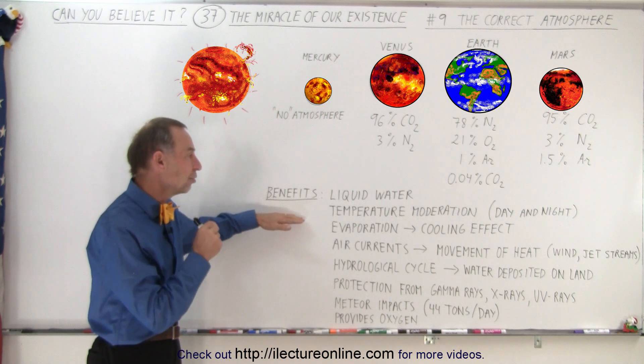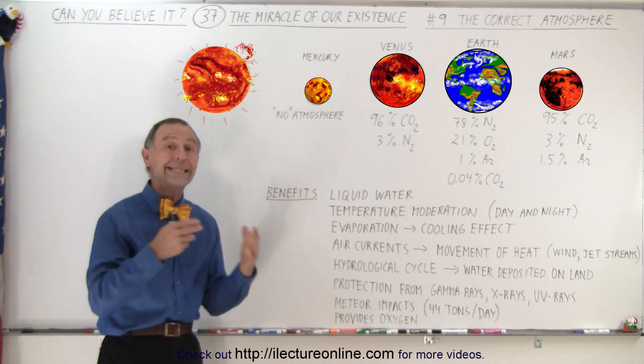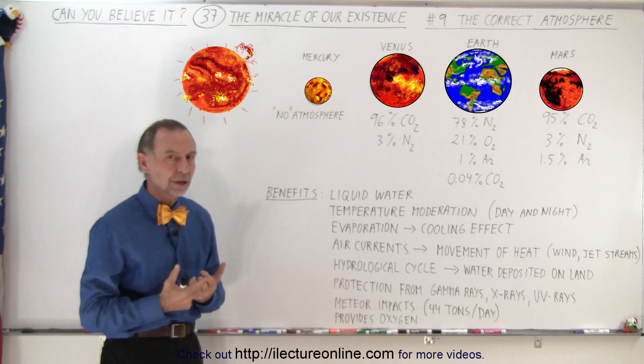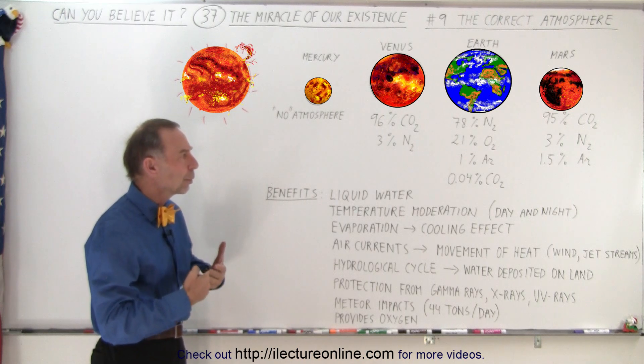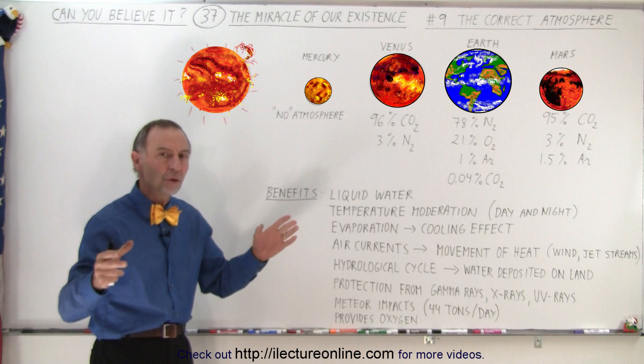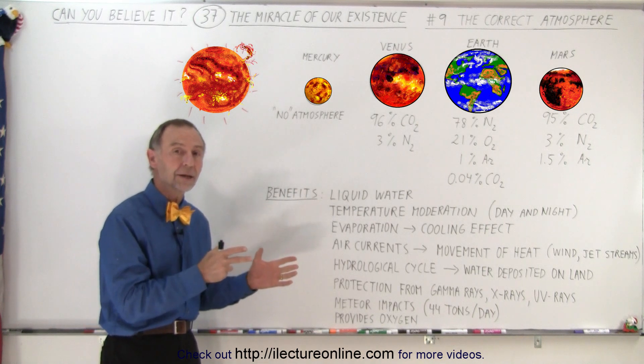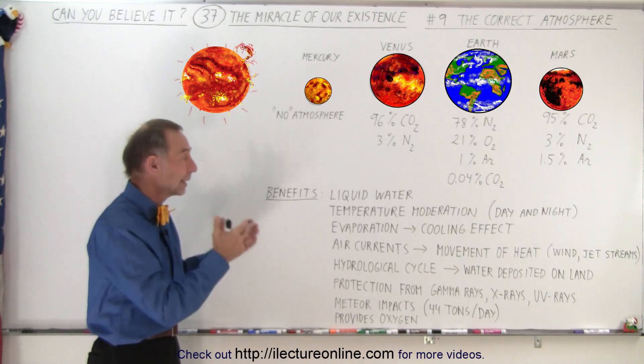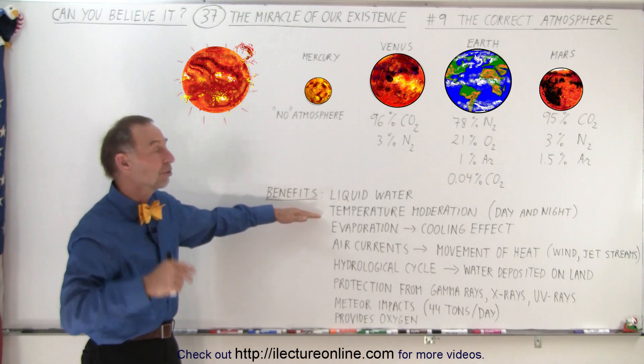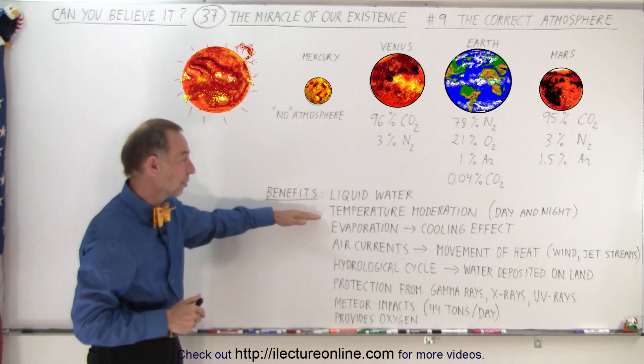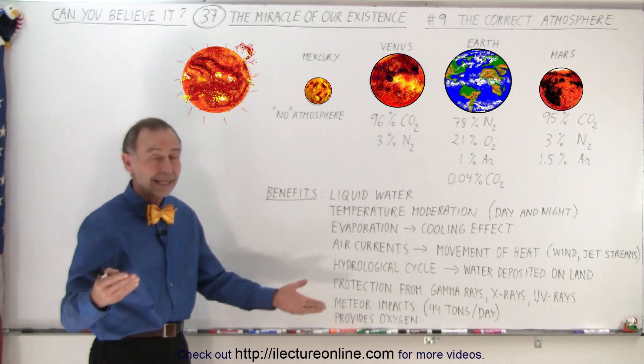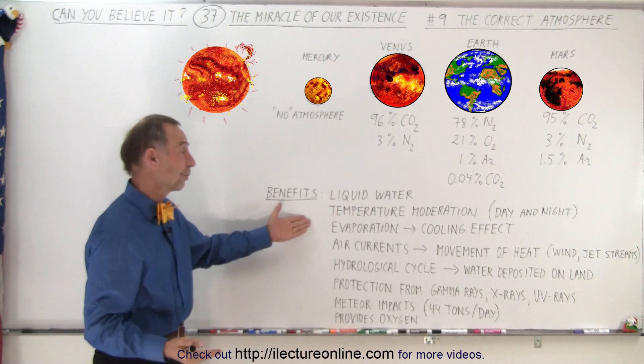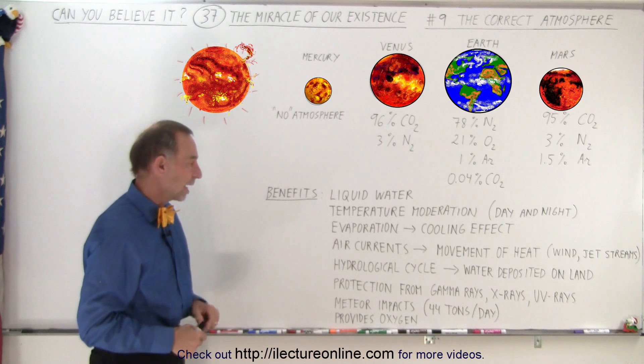Secondly, it is a good temperature moderator between day and night. If there wasn't enough of an atmosphere there, or there was the wrong kind of atmosphere there, then we wouldn't be able to keep days and nights roughly at the same temperature. Yes, it does cool down at night, but not too much, and it doesn't heat up too much in the daytime. The atmosphere is very good at moderating the temperature between day and night. If you go to the moon, for example, the difference between day and night is well over 200 degrees Celsius, and so therefore you can see that it's a lot better here because of the atmosphere.